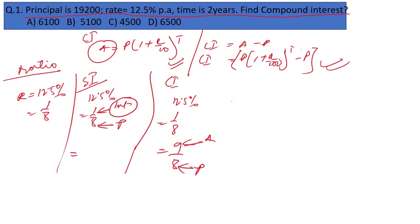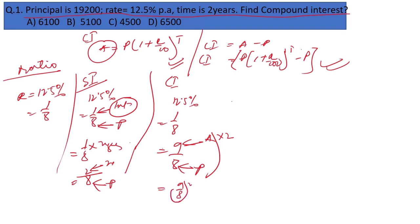For simple interest, the ratio for 2 years is 2/8, where 2 is the interest and 8 is the principal. But for compound interest, we square the ratio: (9/8)² = 81/64. The amount is 81 and the principal is 64.